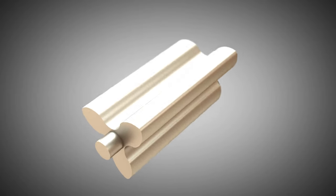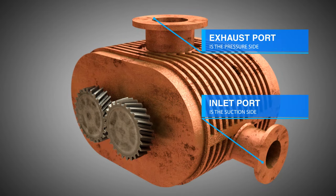First, we look at a very simple variant with straight lobes. The housing has two inlet ports and one exhaust port.